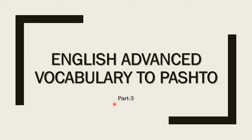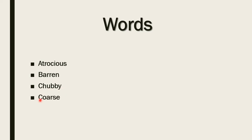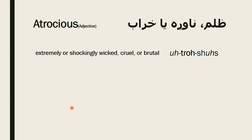So without any further waiting, let's jump to the words. The first word is atrocious, and the second word is barren. The third word is chubby, the fourth word is coarse, and the last one is close-up. So let's jump to the first word: atrocious.